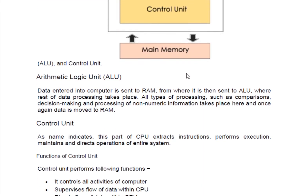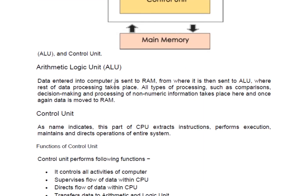Let's understand the ALU first. Data entered in a computer is sent to the RAM first, and from there it is sent to the ALU. For example, if a user types content in a computer, the data is temporarily stored by the RAM, and then RAM sends the data to the ALU. The ALU then performs the processing task, which can include comparison and decision-making processes. After completing its decision, it will again transfer data back to the RAM.